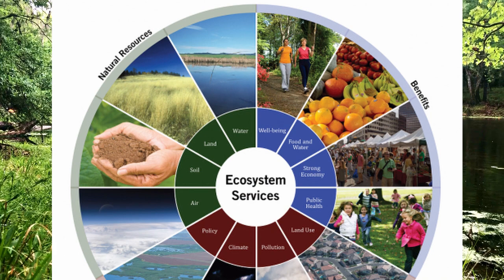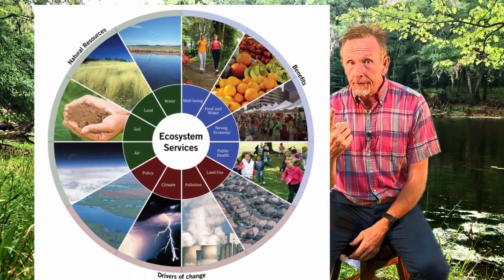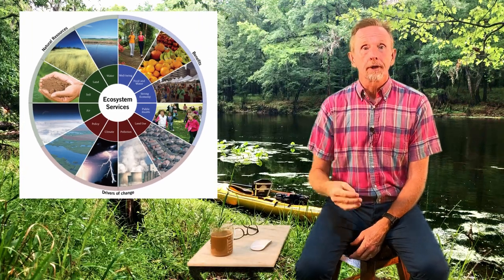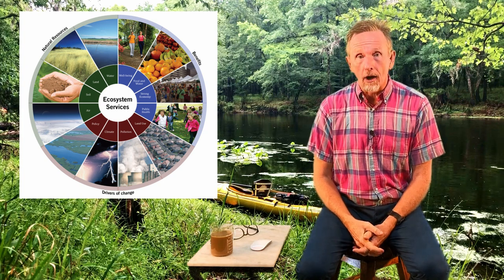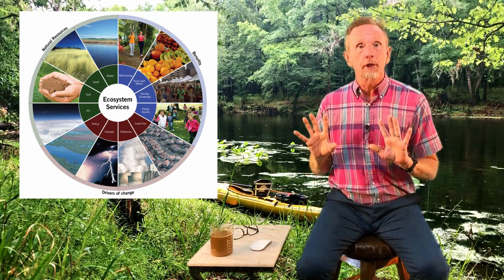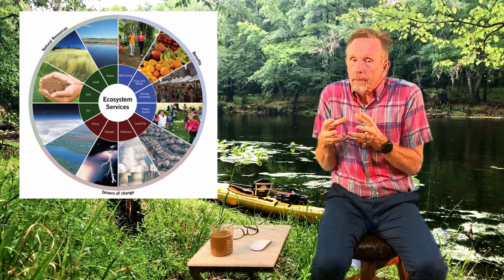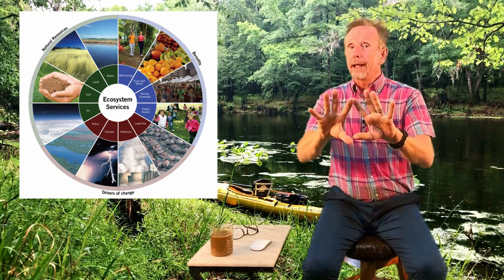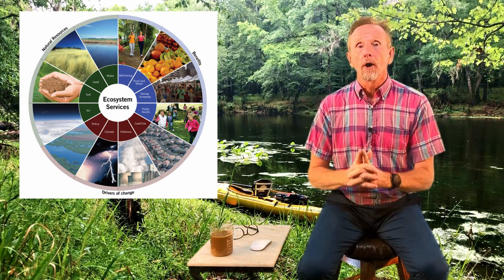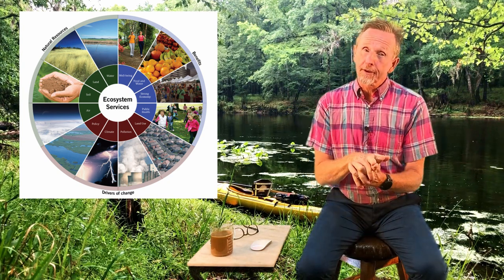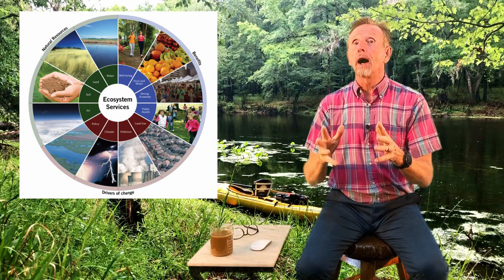Remember, ecosystem services are all the things that nature is providing for us: oxygen, clean water, basic food that we need, livelihood. Many of the things that we rely on are happening in nature out in the rural areas. Most of us live in urban areas, but we're dependent on the ecosystem services from the rural. The mass extinction may have an effect on our ecosystem services — the things we need for survival.